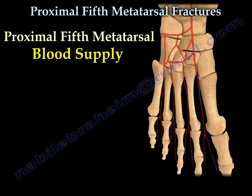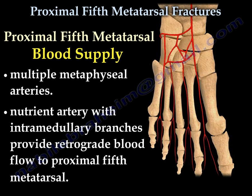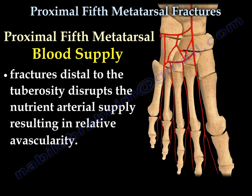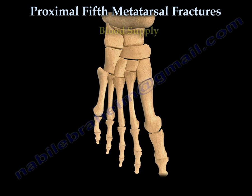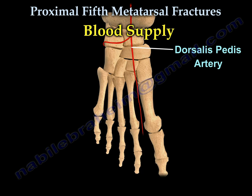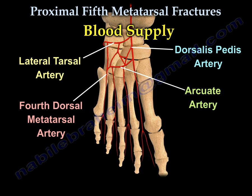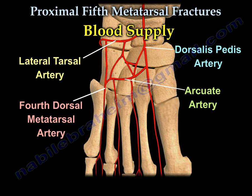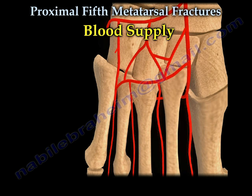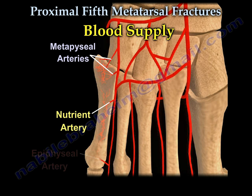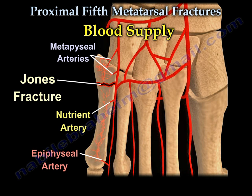The proximal 5th metatarsal blood supply includes multiple metaphysial arteries. The nutrient artery with intramedullary branches provides retrograde blood flow to the proximal 5th metatarsal. Fractures distal to the tuberosity disrupt the nutrient arterial supply, resulting in relative avascularity. The blood supply includes the dorsalis pedis artery, the lateral tarsal artery, the 4th dorsal metatarsal artery, and the arcuate artery. The 5th metatarsal is supplied by the metaphysial arteries, the nutrient artery, and the epiphyseal artery. Here you can see the Jones fracture occurring in an area of limited blood supply.